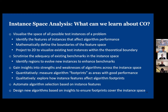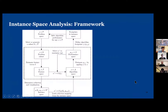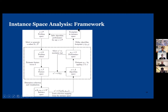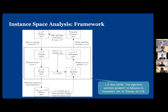We can qualitatively explore this space and get the 'why' — understand why an algorithm performs well, for what kinds of instances, what properties are affecting things. Of course we can use all this for automated algorithm selection and construct algorithm portfolios. The framework is built on Rice's algorithm selection problem from 1976 — we have problem instances, we calculate features, we have algorithms, we have performance metrics, and we learn the relationships. But beyond algorithm selection, my goal has been to generate and visualize the instance space, study footprints, infer algorithm performance across the whole space, and assess the quality of existing benchmarks.